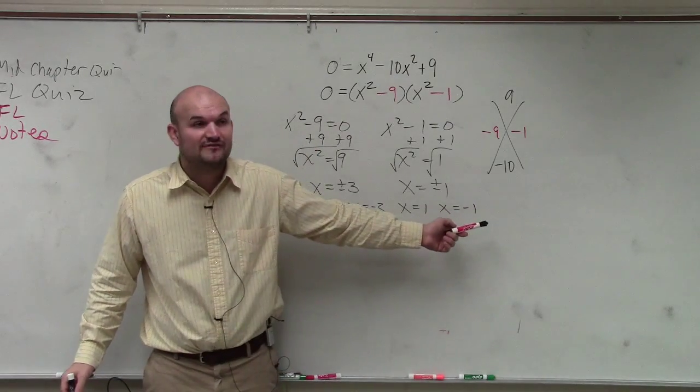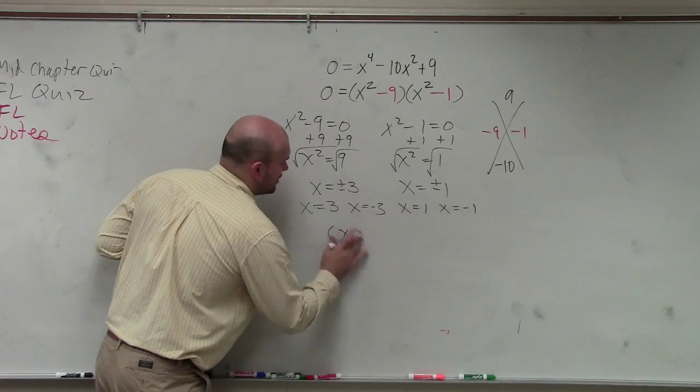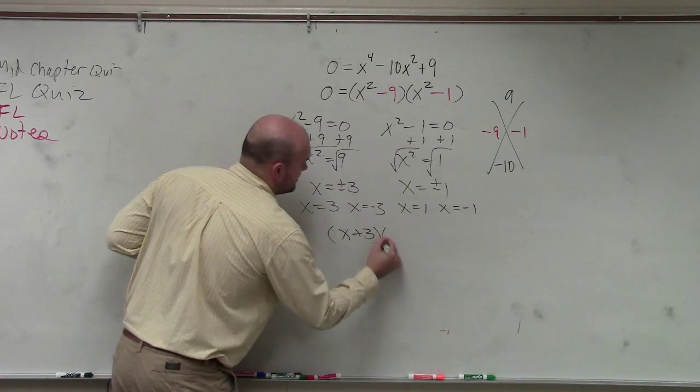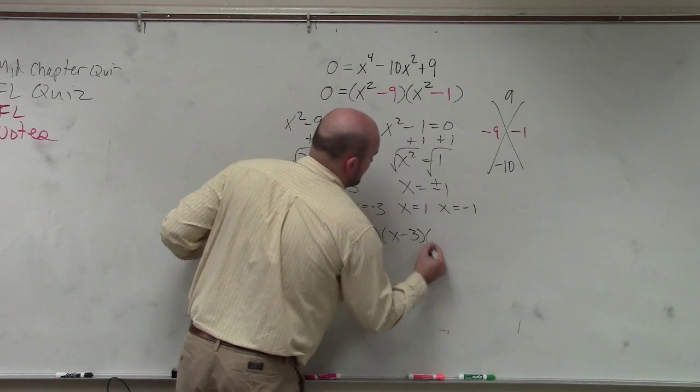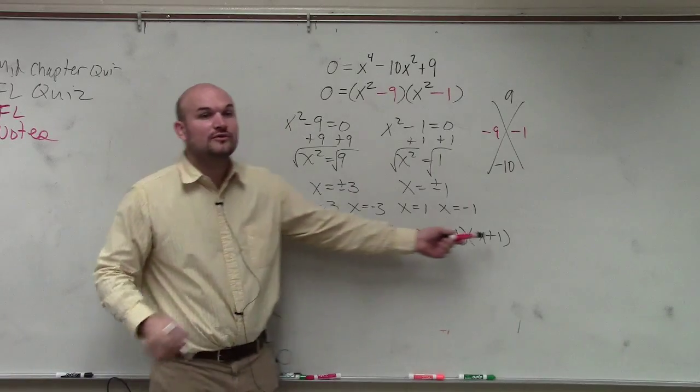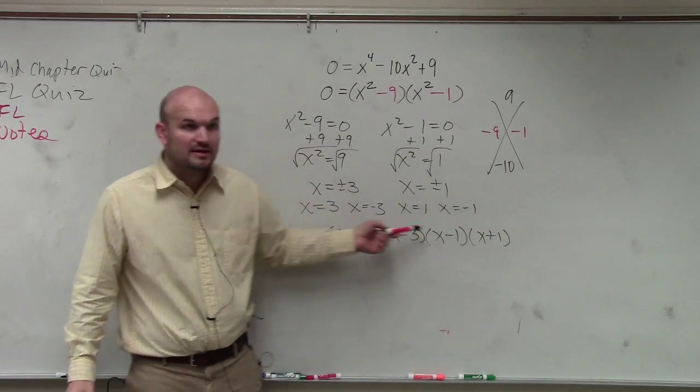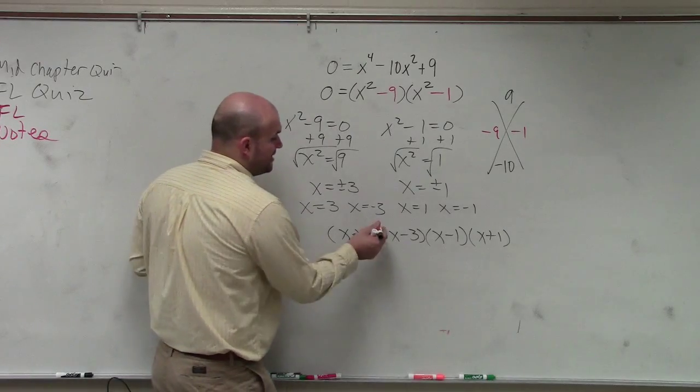If given the zeros, can we write the factors? Yes. We could say x plus 3, x minus 3, x minus 1, and x plus 1. So those are all the zeros written as factors. Now, are they all linear factors? Yes. And you guys can see that they all have a multiplicity of 1.